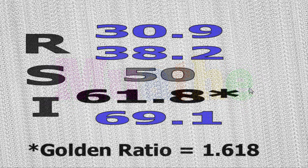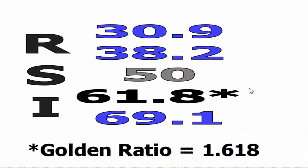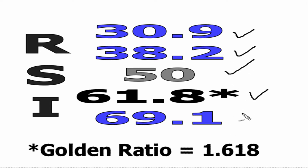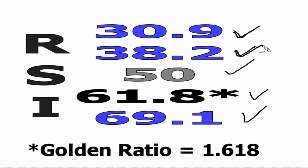Let's take another look at the following RSI numbers that we are always following: 30.9, 38.2, 50, 61.8, and 69.1. You can take a look at the video description for a link explaining where all these numbers come from. All these numbers — 30.9, 38.2, and 69.1 — are variations of 61.8.